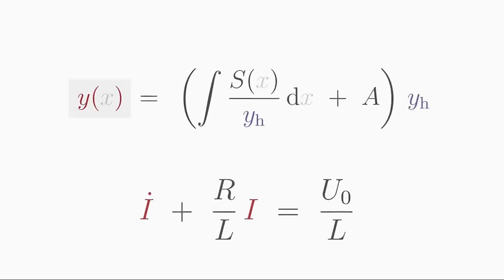The sought function Y corresponds here to the current I. The perturbation function S corresponds to U0 over L and is time-independent in this case. We denote the homogeneous solution by IH.